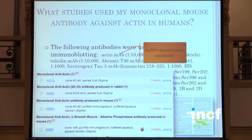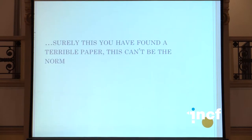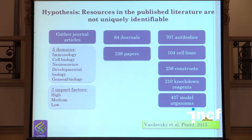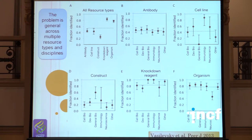I go to Sigma and lo and behold, I have multiple antibodies which I now have to purchase all of and try to recreate the study. This is bad, but surely this cannot be the state of the art. Our colleagues at OHSU had taken this on as a question, and the hypothesis was that this was in fact the norm. They looked across five different domains of biological science, different impact factors of journals, pulled out lots of antibodies, lots of journals, lots of papers.